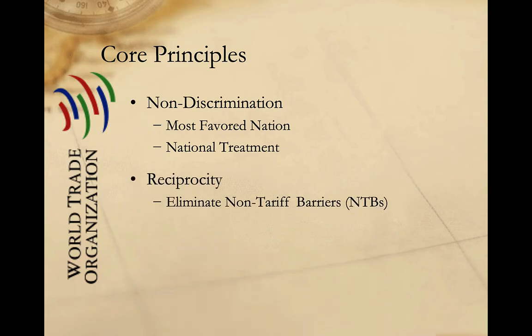The second key principle is that of reciprocity. WTO members agree to work towards the elimination of non-tariff barriers — things like quotas or restrictive safety standards — and instead to use tariffs to regulate international trade. They also agree to move towards the elimination of tariffs through reciprocal agreements.